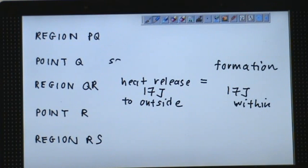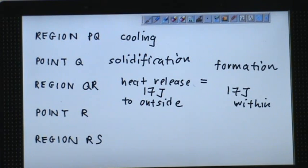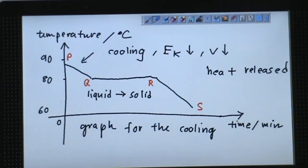Point Q is the beginning of solidification. Region PQ is the cooling process from liquid state. And then QR is the mixture of liquid and solid. But ultimately, it becomes solid naphthalene completely at point R. When it becomes solid completely at point R, then further cooling will occur. Further cooling occurs along region RS.